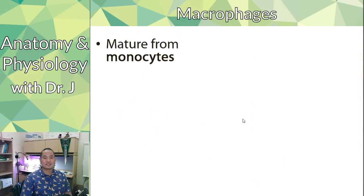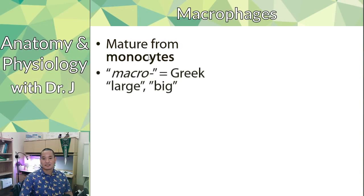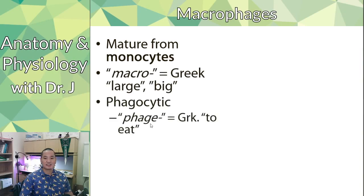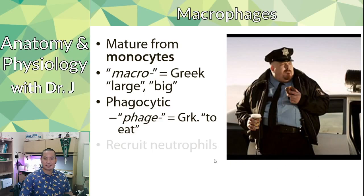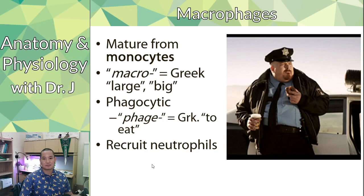Macrophages are the mature, differentiated forms of monocytes. 'Macro' means large and big, and 'phage' means to eat, so they are phagocytic — big eaters, but also defenses of your body against pathogens. They respond to neutrophils, but they also recruit more of your immune defenses as well.